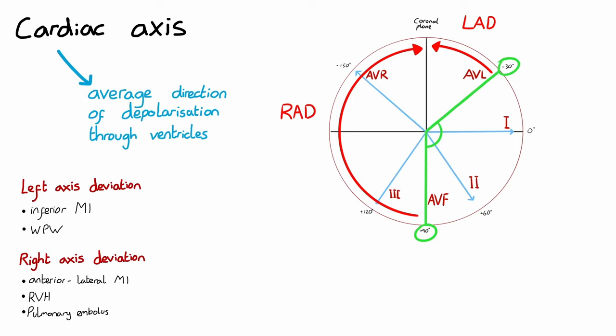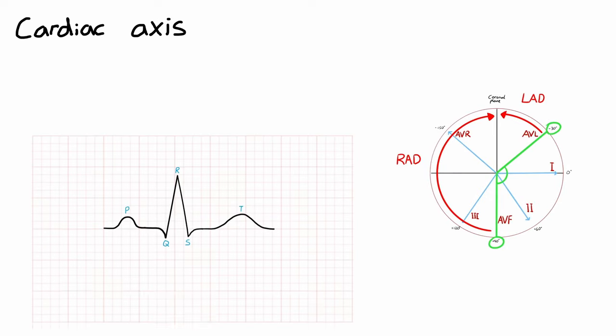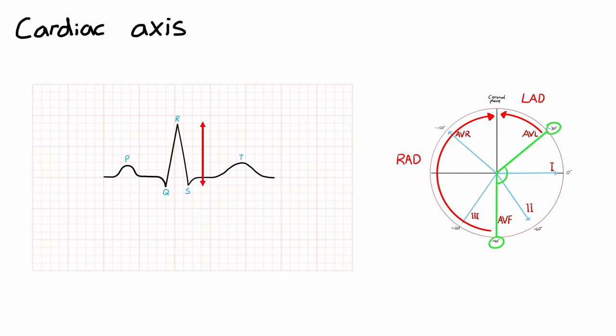Now you will not be expected to calculate the cardiac axis for medical school exams; however, you should be able to identify if there's left axis deviation or right axis deviation. To do this we're going to use the QRS complexes in three different leads. The more positive a QRS complex is in a particular lead—that is, the larger the amplitude of the R wave—the more in line with this lead direction the cardiac axis is likely to lie.